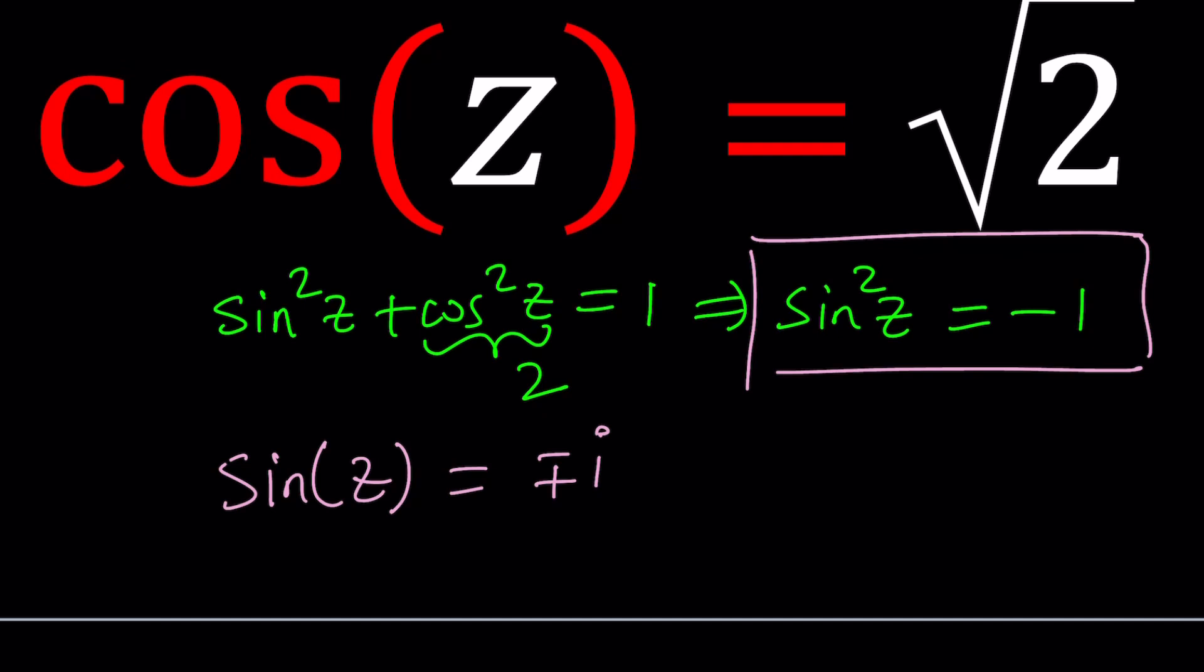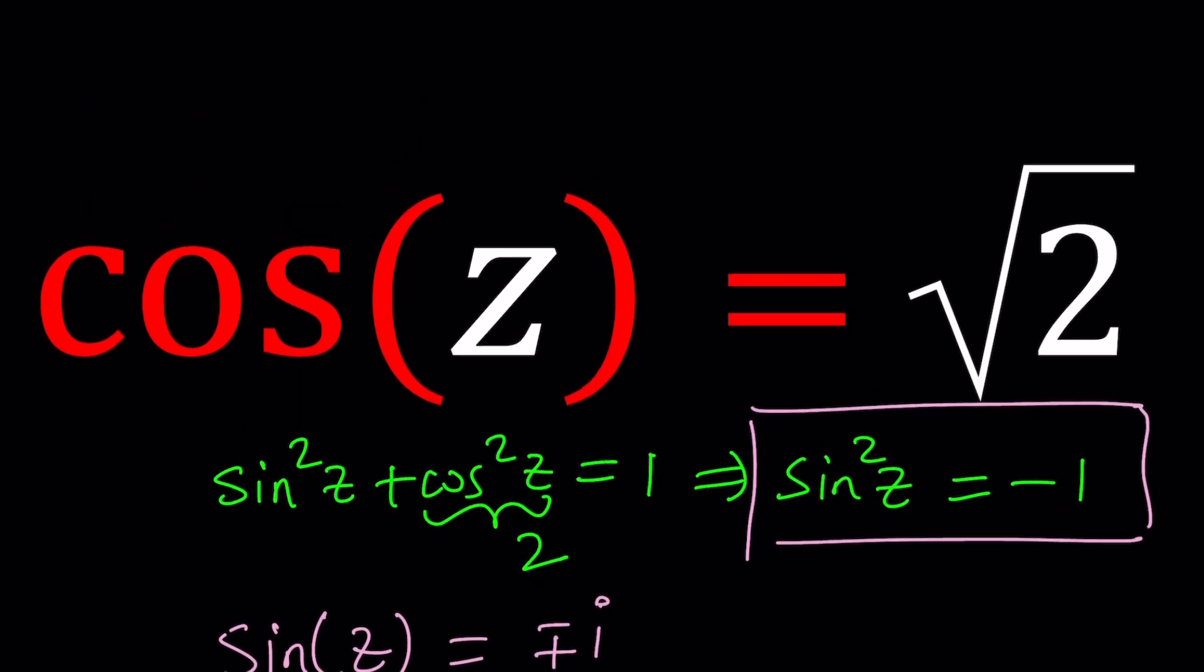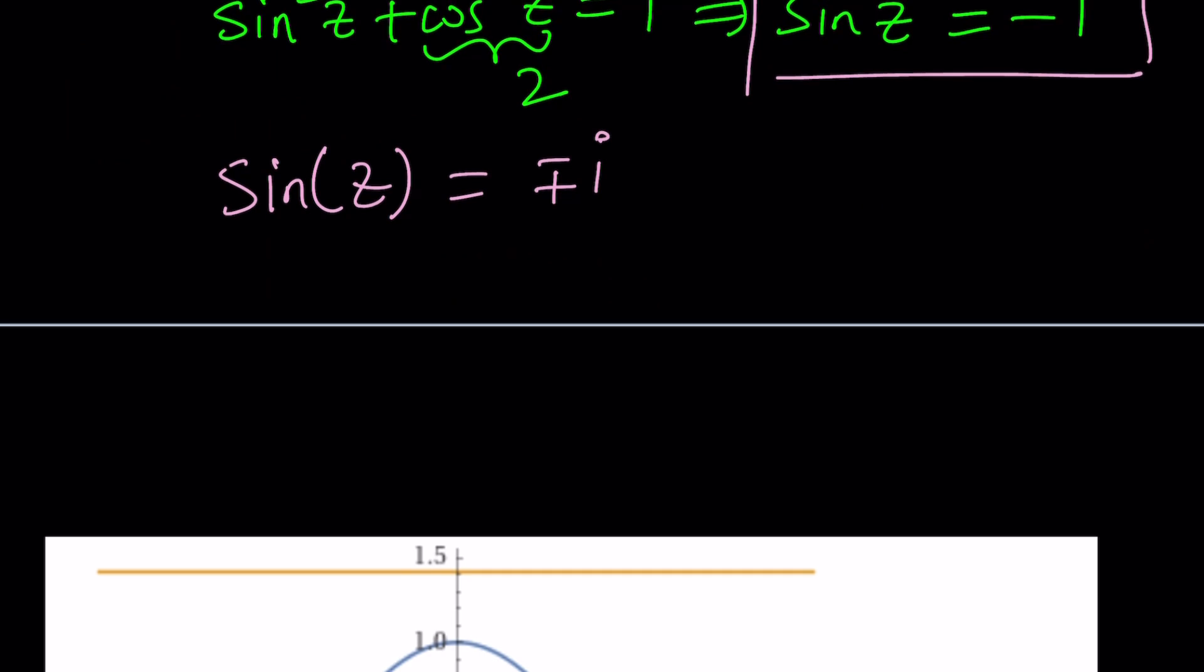But what is that supposed to mean, right? So let's go ahead and stick to cosine, because at least the right-hand side is a real value, and try to find the values of Z from here. Before that, though, I want to show you a graph.